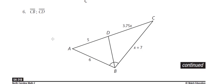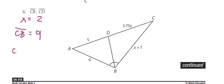On number 6, you set up proportions again — you have an angle bisector, so you have 5/6 = 3.75x/(x+7), or 3.75x/5 = (x+7)/6. Here we get x equal to 2, which tells us that CB is equal to 9 and that CD is equal to 7.5.